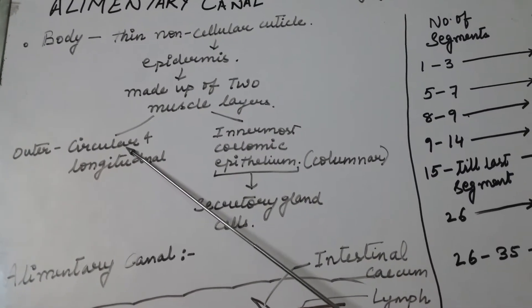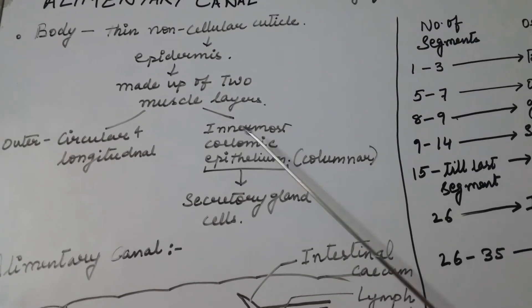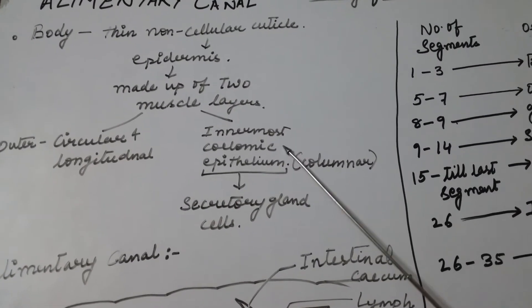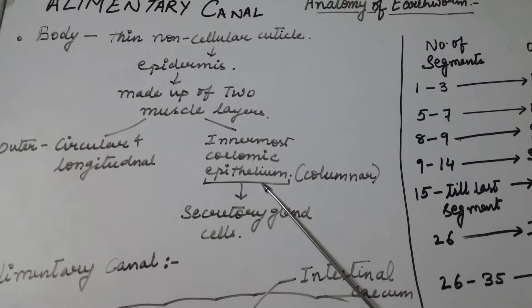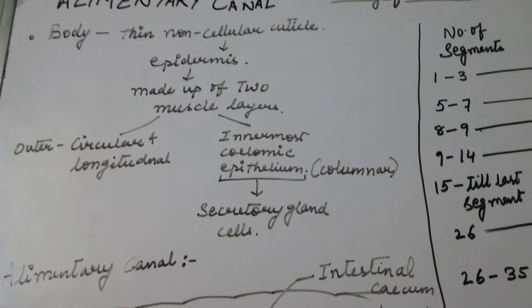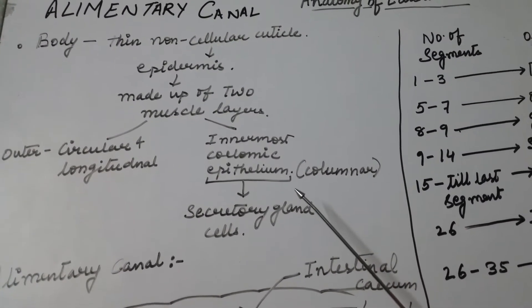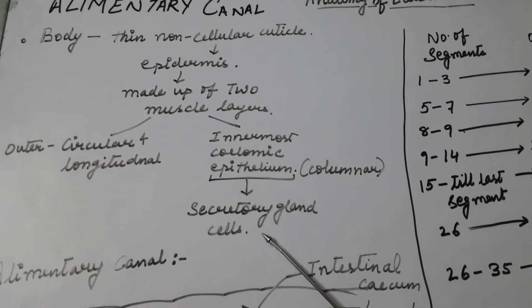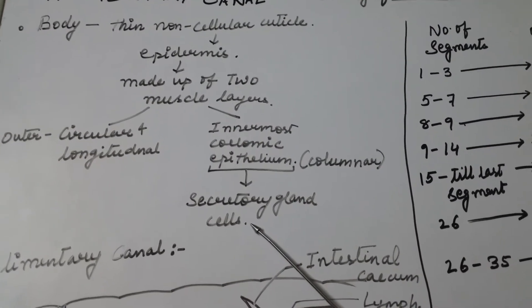The outer circular and the longitudinal layer and innermost layer is called the coelomic epithelium. This epithelium layer consists of columnar epithelial cells that has the function of secretion, so there are secretory gland cells.